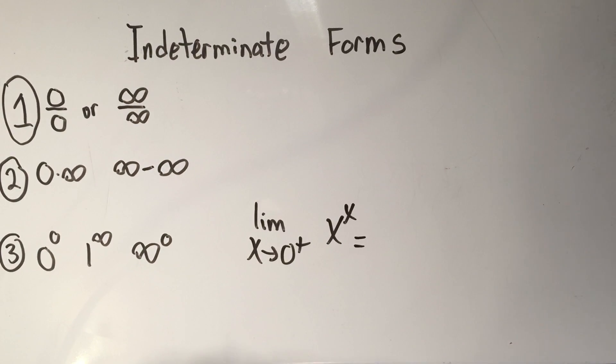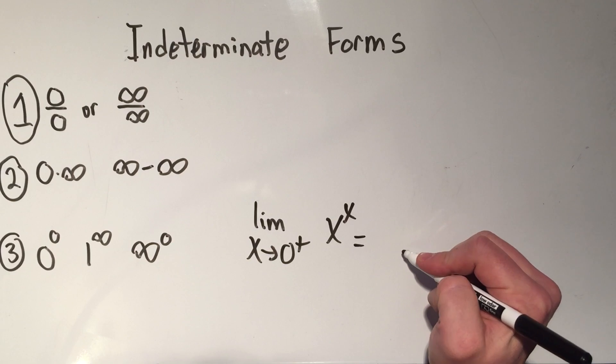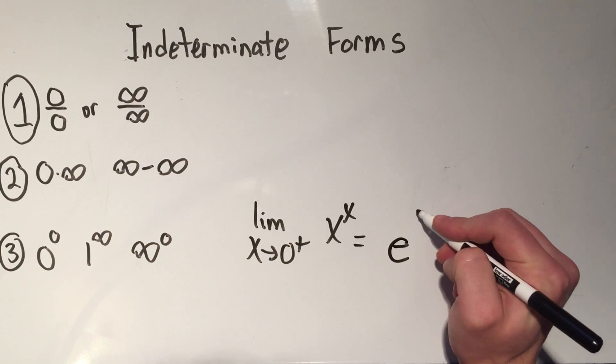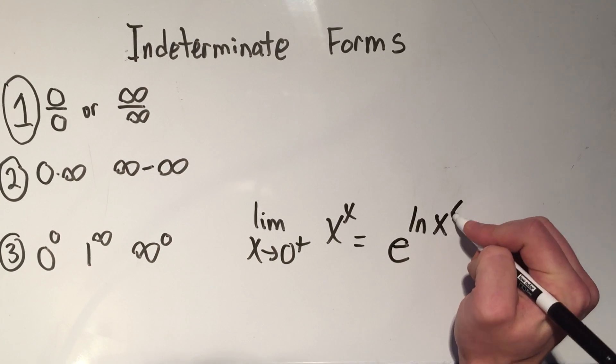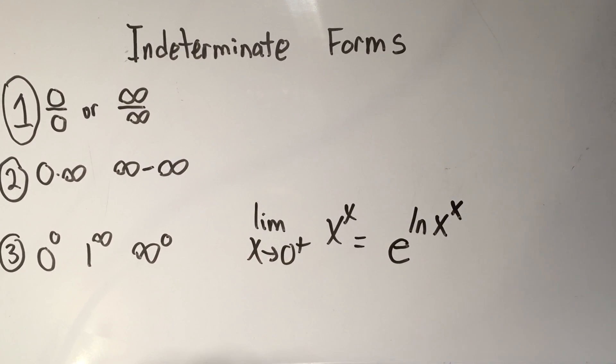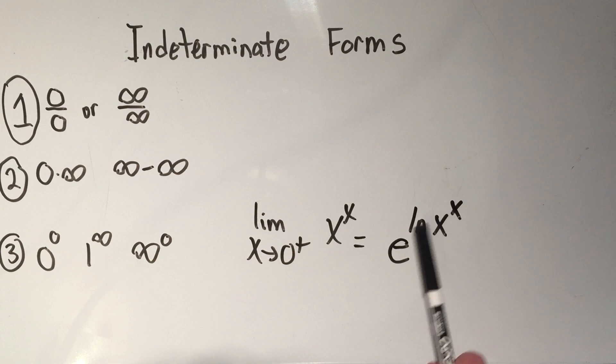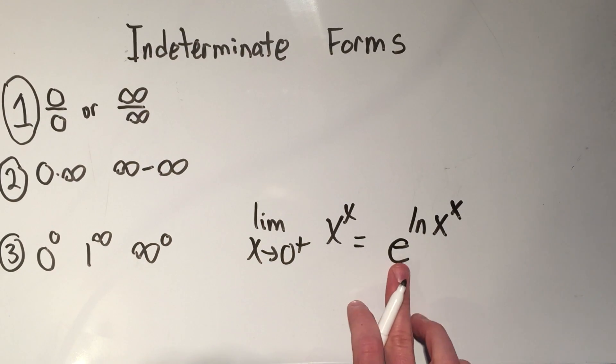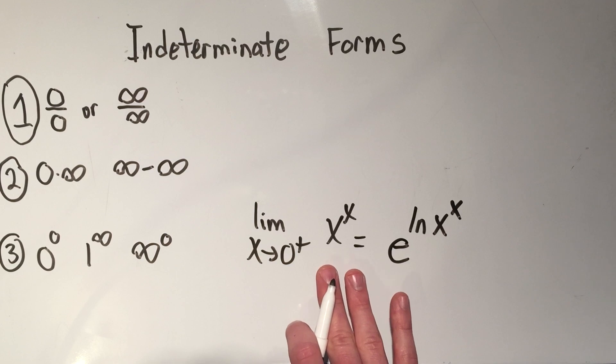So what we do with all of these is we do this trick where we do e to the ln. I'm taking advantage of the property of logarithms that said if I have e to the log, I can cancel those and just get what's on the inside. Well, if I can go from right to left, I can go from left to right. So I haven't done anything wrong here, it's just I've kind of like multiplied by one in a sense, so that's why I'm allowed to do this.